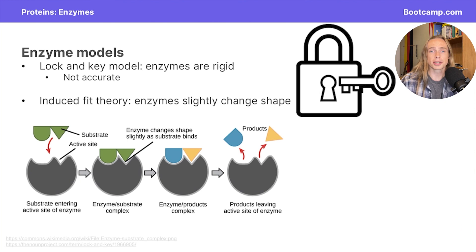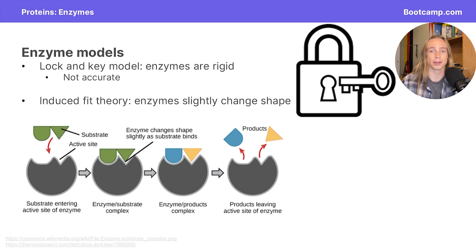There have been a few different models that try to explain how the active site on an enzyme works. One of the earlier models was known as the lock and key model, which implied that the enzyme's active site was very rigid and didn't move at all. This model has since been discredited. The new model is known as the induced fit model, which says that the active site of the enzyme will change shape slightly to accommodate the substrate. This is the more accurate of the two models.